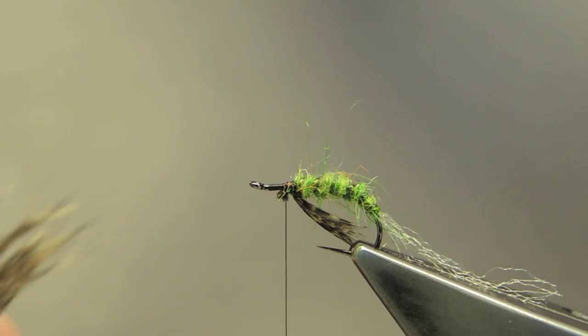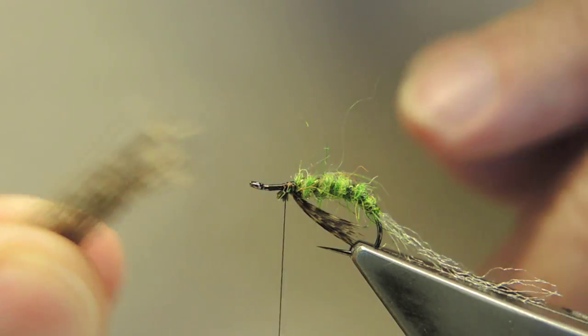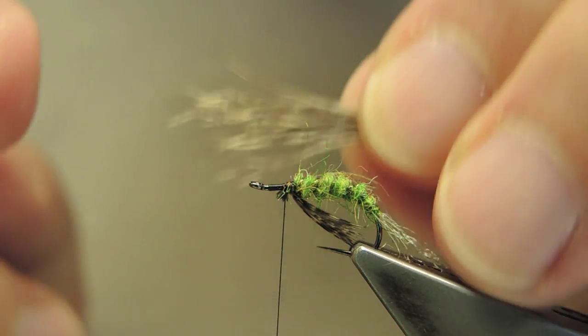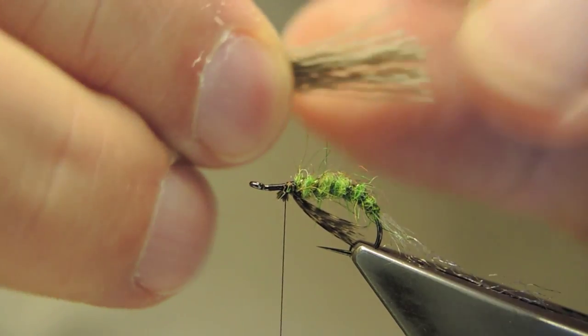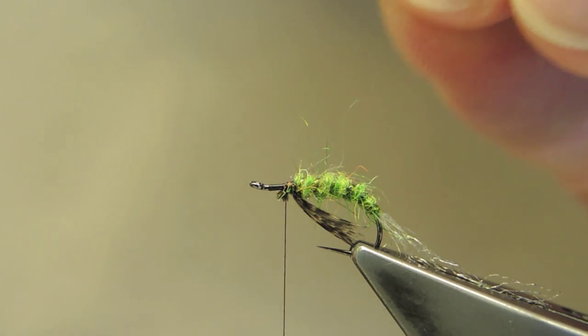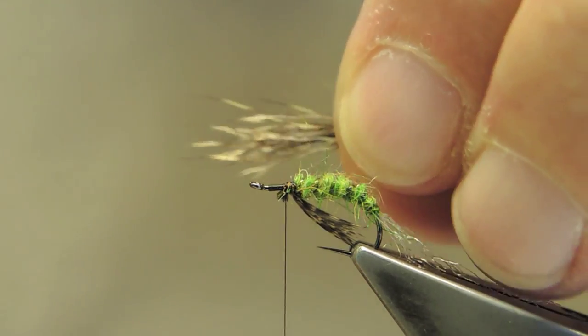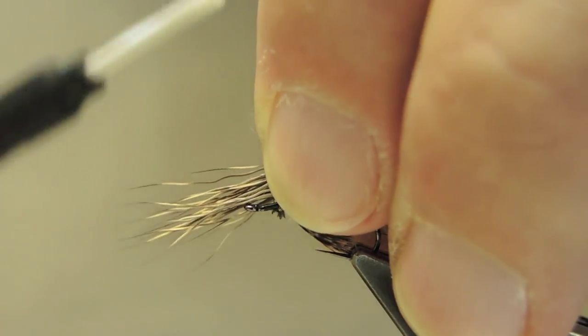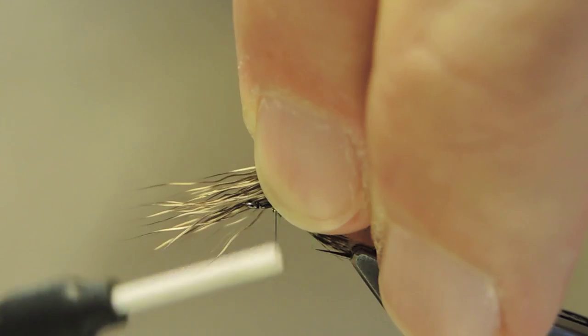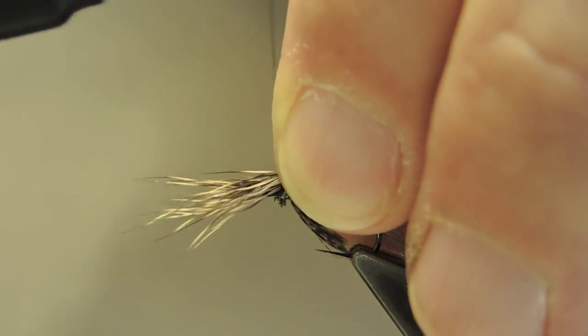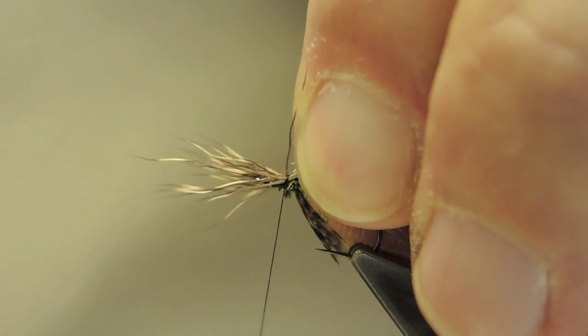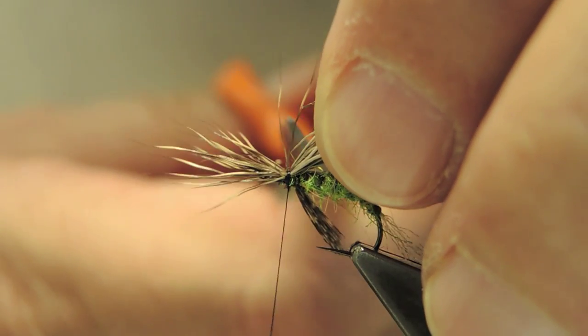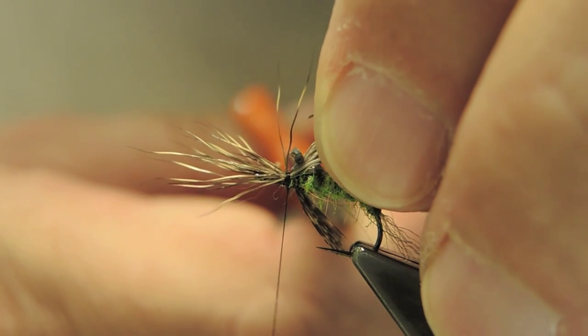For the wing, some deer hair. I like a bit of a raggedy end for the tips, so I don't stack. It's tied in facing forward. Length of the wing, it's about the length of the hook shank. Cinch it down tight, then trim away the butts to form a shoulder.